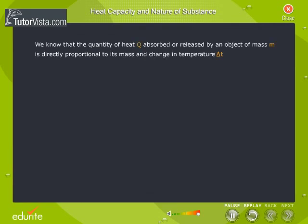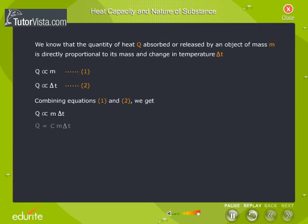The quantity of heat Q absorbed or released by an object of mass M is directly proportional to its mass and to the change in temperature Delta T: Q is directly proportional to M, and Q is directly proportional to Delta T. Combining these, Q is directly proportional to the product of M and Delta T.